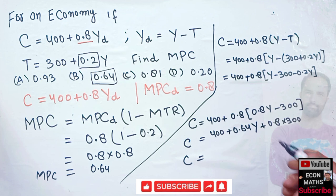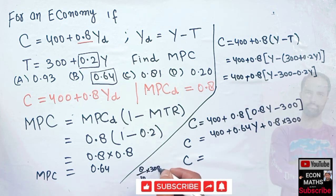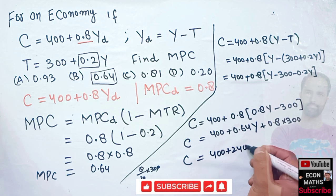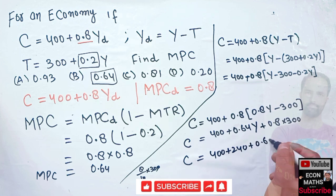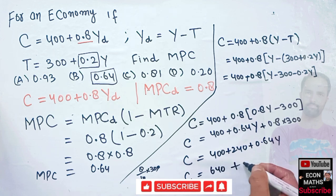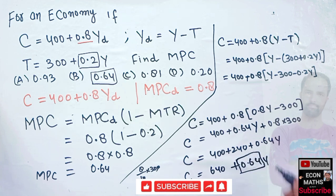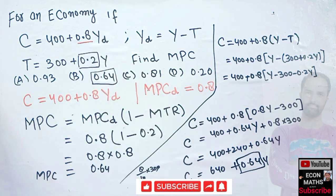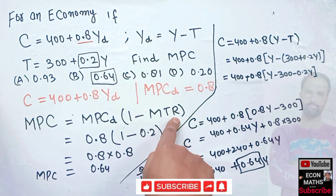Correcting a small sign error: 0.8 into 300 is 240, so we have 400 plus 240 plus 0.64 Y, which gives C equal to 640 plus 0.64 Y. The coefficient 0.64 is our marginal propensity to consume, while 0.8 denotes the marginal propensity to consume with respect to disposable income. You can use either the formula or derive the function directly.